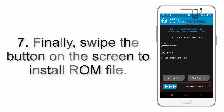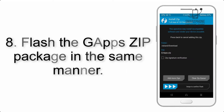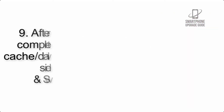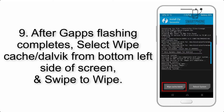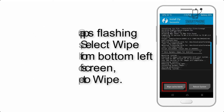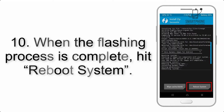Step 7: Swipe the button on screen to install the ROM file. Step 8: Flash the GApps zip package in the same manner. Step 9: After GApps flashing completes, select Wipe Cache and Dalvik from the bottom left side of the screen and swipe to wipe.